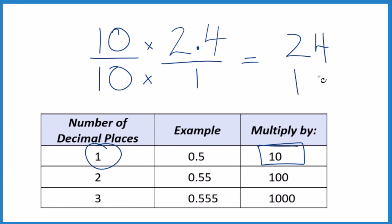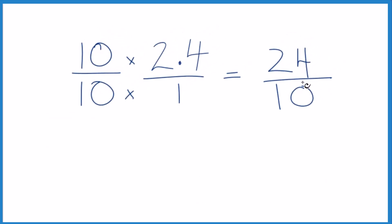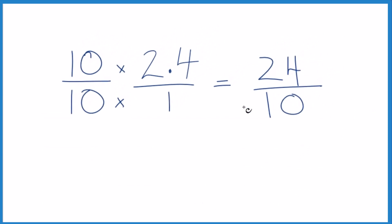10 times 1 is 10, and we end up with the decimal 2.4 equals the fraction 24 tenths. And we can simplify this even further. Since they're both even, let's divide the numerator and denominator by 2.